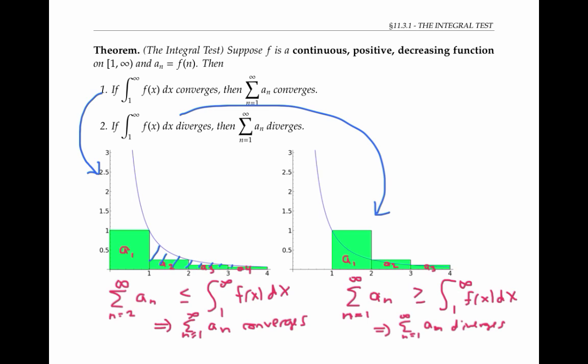To apply it, we just need to be able to integrate the function that corresponds to our terms, and check that that function is continuous, positive, and decreasing. Actually, it's enough to check that the function is eventually continuous, positive, and decreasing. By eventually, I mean that it has these properties on some interval from r to infinity for some number r.